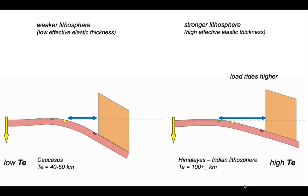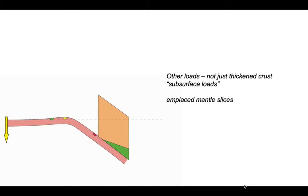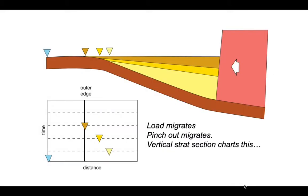Well, these are some simple cartoons, but of course, we can make this more complicated. There are other loads, not just thickened crust. These are generally called subsurface loads and an example could be dense material that's carried up onto our lithosphere. For example, a mantle slice. So emplaced mantle slices act as subsurface loads. An additional one, which is also potentially really important, is an attached subducted oceanic slab pulling down the adjacent continental lithosphere. So it's not just thickened crust that can load the lithosphere. A key point about these subsurface loads is they'll pull down the mountain belt. So you may have lower mountains or even no mountains. It may be entirely a submarine situation and a correspondingly deeper foreland basin.